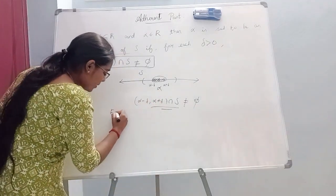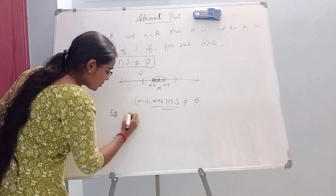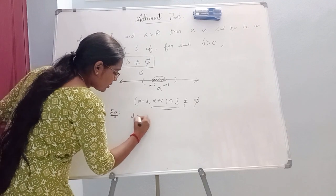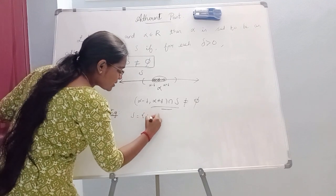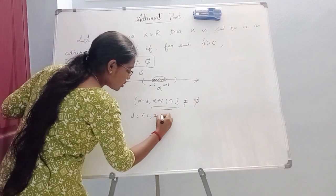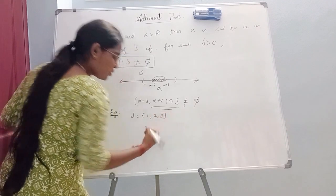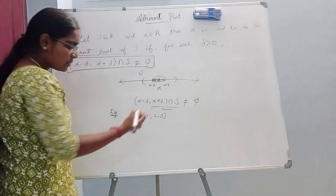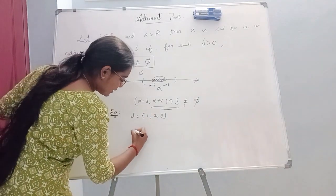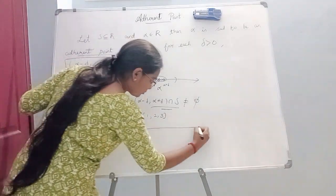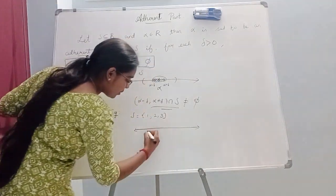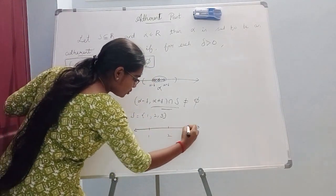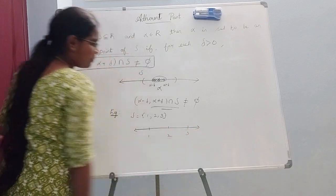In this example, let's look at S. S equals the finite set {1, 2, 3}. Now, the points plotted are 1, 2, 3.